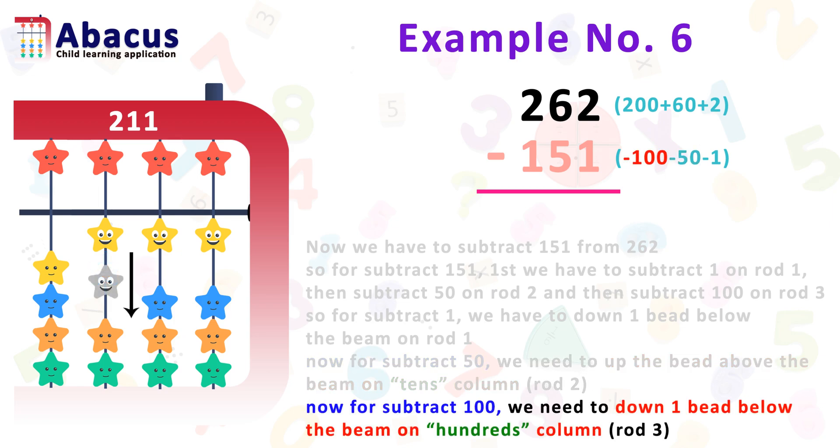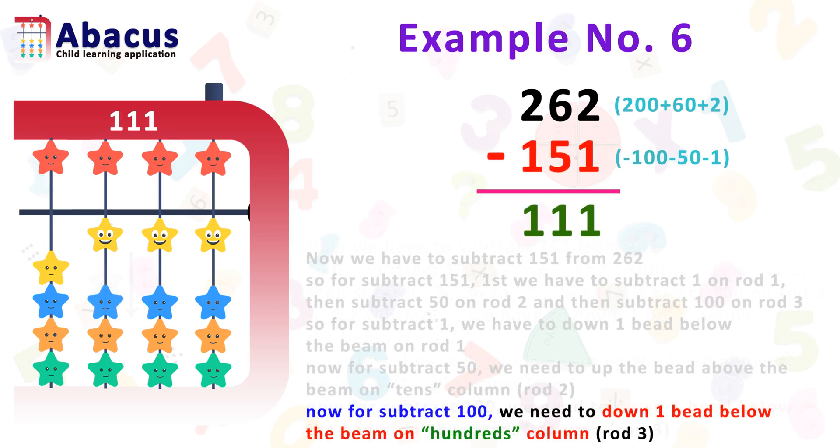Now, for subtract 100, we need to down 1 bead on hundredths column below the beam. Third rod is hundredths column.